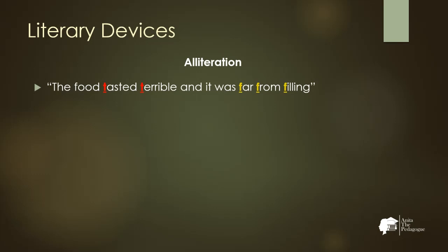The first literary device is alliteration. An example from the abridged version is: 'The food tasted terrible and it was far from filling.' Alliteration is the repetition of the initial consonant sound — here the 't' and 'f' sounds have been repeated in the expression.